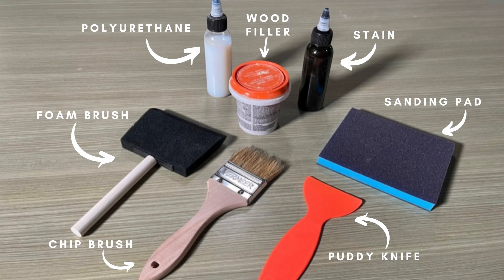In your repair kit you will find wood filler, a putty knife, a foam brush, a chip brush, a 400 grit sandpaper pad, polyurethane, and a cup of stain matching the stain on your table.